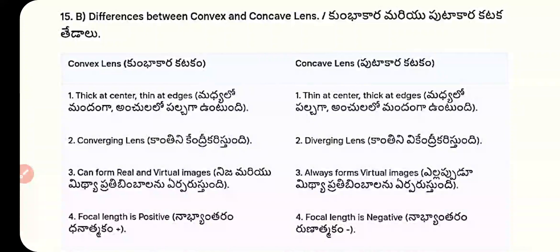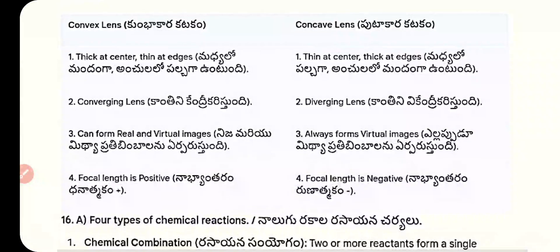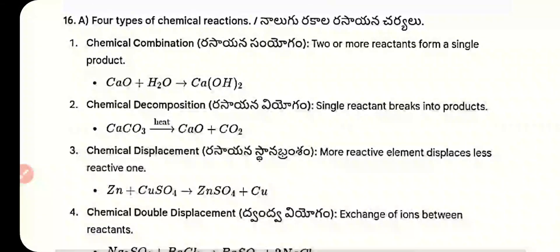Differences between convex and concave lens: Convex lens — thick at center, thin at edges, converging lens, can form real and virtual images, focal length is positive. Concave lens — thin at center, thick at edges, diverging lens, always forms virtual images, focal length is negative.